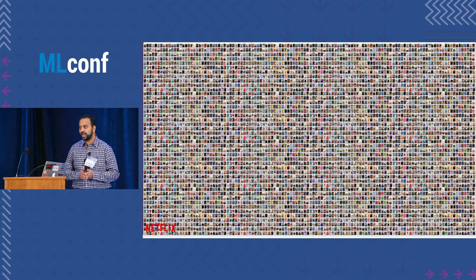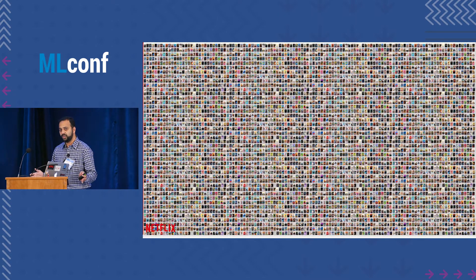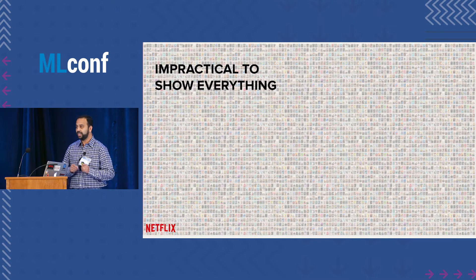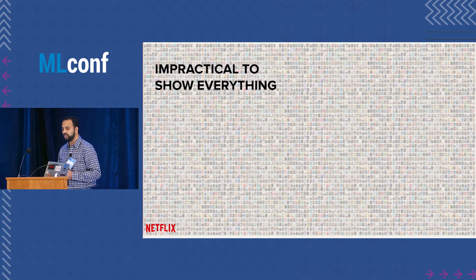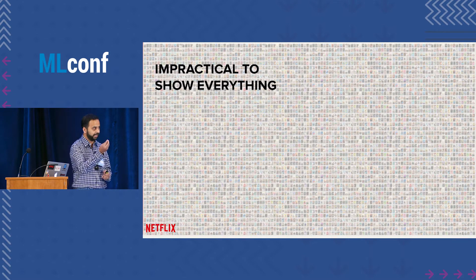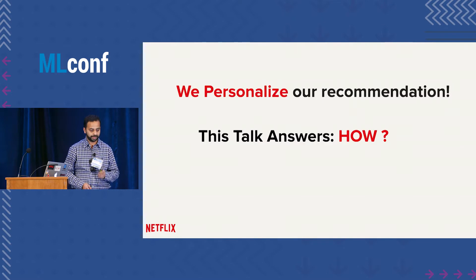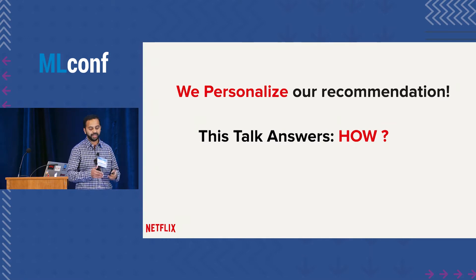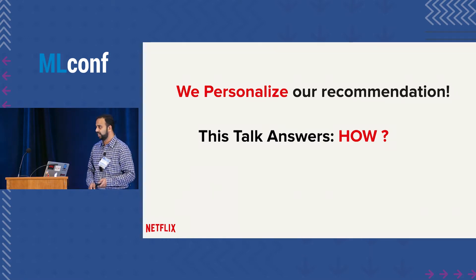The real problem is that when you have thousands and thousands of items in your catalog and a very finite real estate, how do you show everything in front of our members? It's really impractical to show everything, so you have to select a handful of content which appeals to our members and present them. So we personalize our recommendations — and the question is, how do we do it?